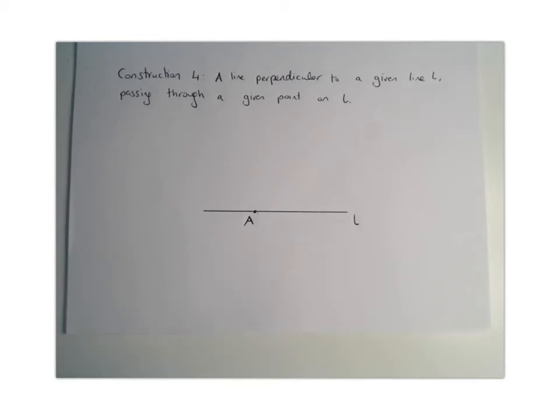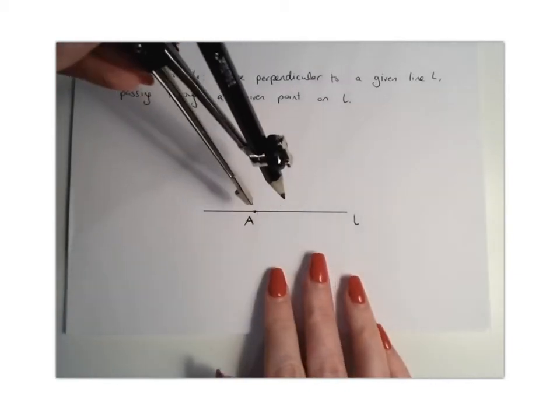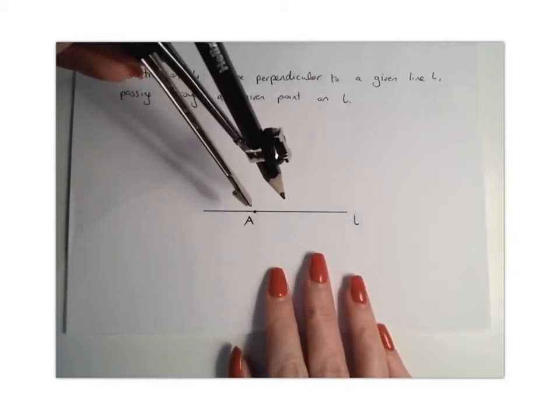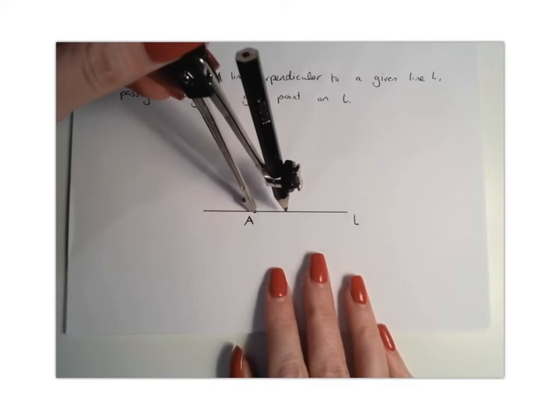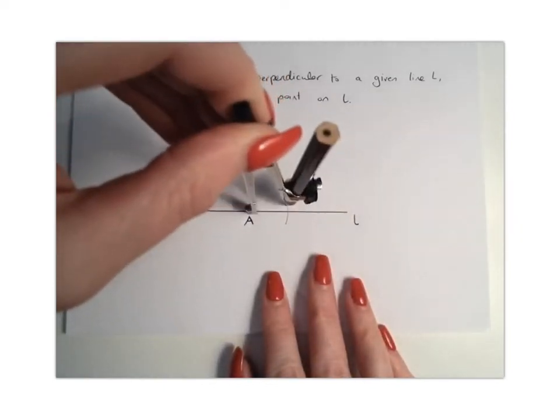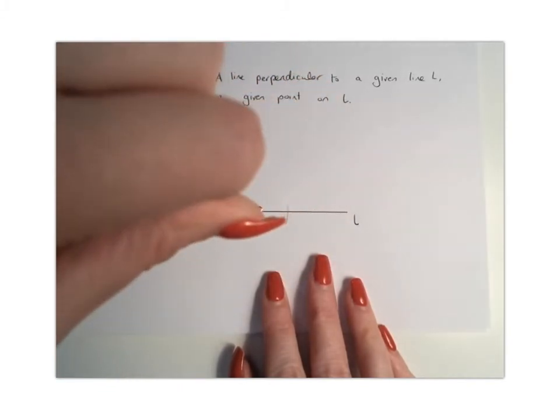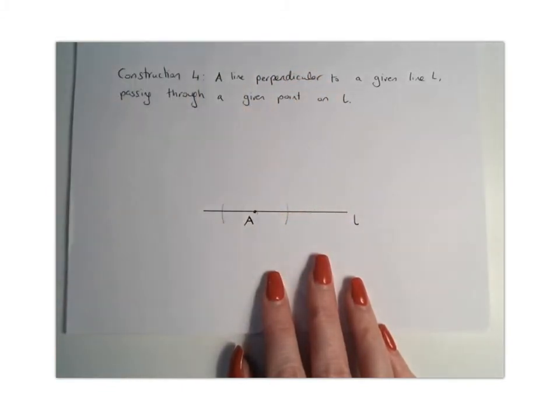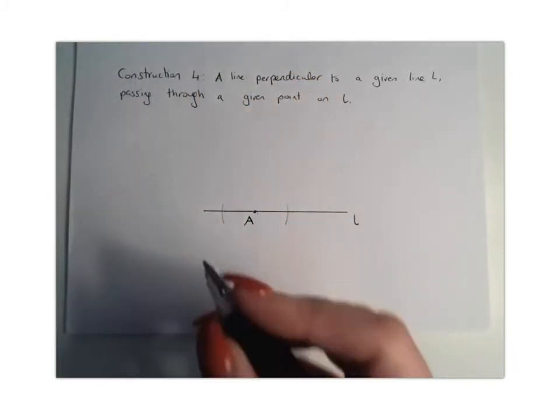The first thing you're going to do is place your compass point at A, and keeping your compass width quite small, draw an arc on either side of A. You're going to place it at A, then draw an arc here and an arc here. We're going to label those X and Y.